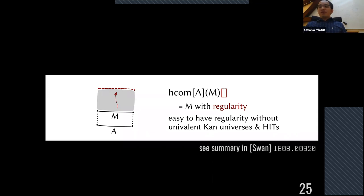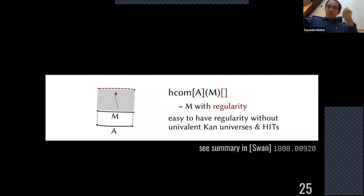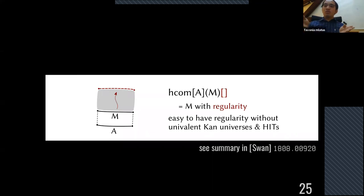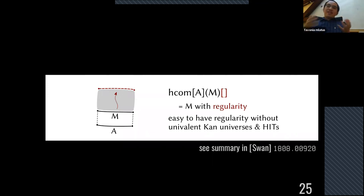There's a very nice summary by Andrew Swan on arXiv that I recommend everyone read — it covers what's currently known and unknown about regularity. Regularity means: if you do a composition where all the faces are trivial (constant paths), you should get back the same thing. For example, you should get M instead of having an unreduced composition. In general we don't know how to get rid of empty systems, but maybe in some cases we can — I'll talk about that later.